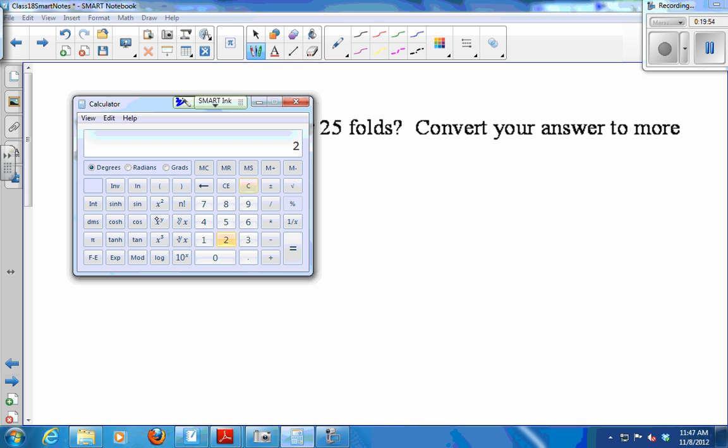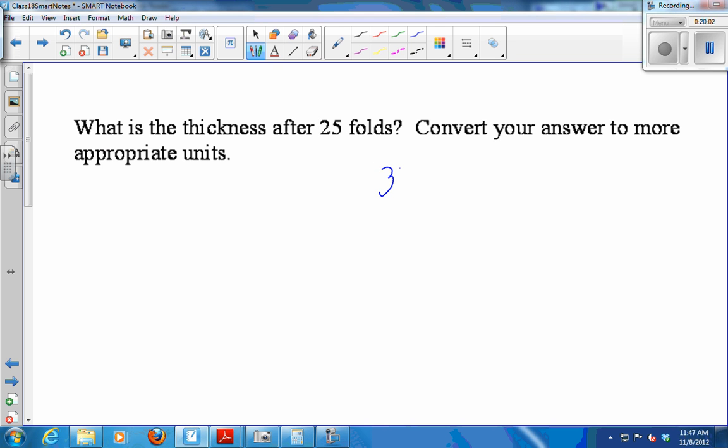25 folds. Let's see. Okay, so 2 to the 25 times 0.01. So 335,544 centimeters. So convert it to meters, and I get 3,355.44 meters. How long is that? How many meters are in a kilometer? A thousand. So I could divide this by a thousand and get 3.35 kilometers.